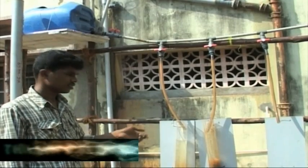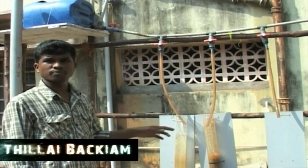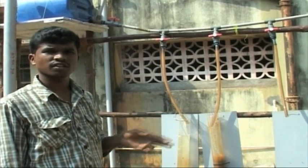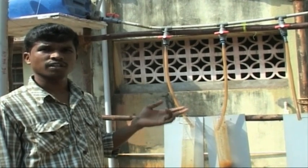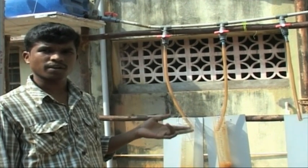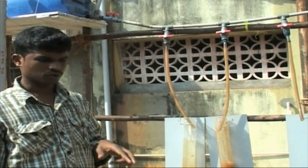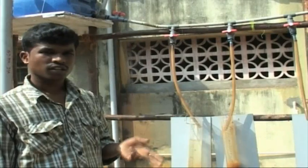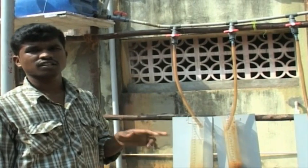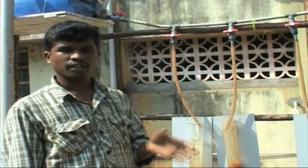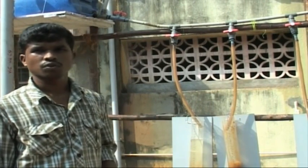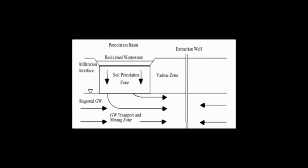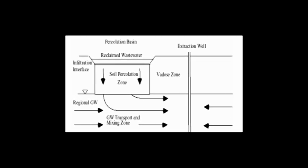In the real field, one percolation basin is created and the recycled water obtained from the wastewater treatment plant is infiltrated into that percolation basin zone. After that, the recycled water infiltrates into the soil medium, which is the vadose zone.